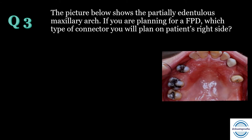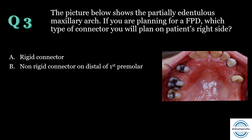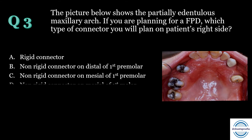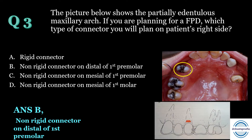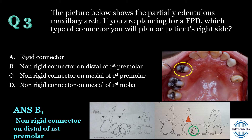Question number three: The picture shows a partially edentulous maxillary arch. If planning for an FPD, which type of connector will you plan on the patient's right side? Options: A) rigid connector, B) non-rigid connector on the distal of the first premolar, C) non-rigid connector on the mesial of first premolar, D) non-rigid connector on the mesial of first molar. The answer is B. The first premolar is the pier abutment as the edentulous space is present on both sides. It acts as a fulcrum for destructive forces, so we plan a non-rigid connector on the distal portion of the pier abutment as a stress relief point. Placing it on the mesial aspect would cause unseating due to mesial tooth movement.